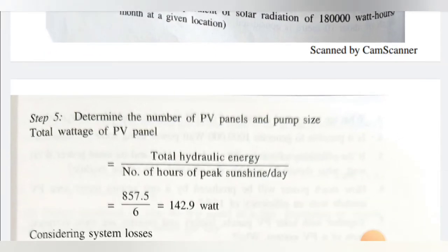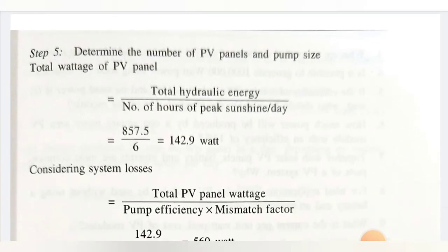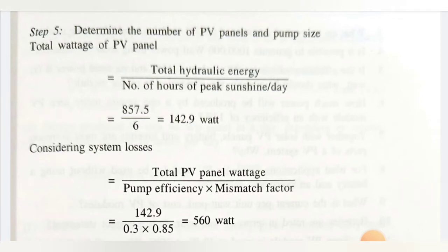Step 5: Determining the number of PV panels and pump size. Total wattage of PV panels required equals total hydraulic energy divided by peak sunshine hours per day: 857.5 Wh ÷ 6 hours = 142.9 Watts. This is the basic panel capacity required before accounting for system losses.